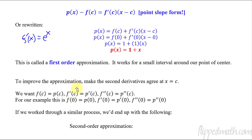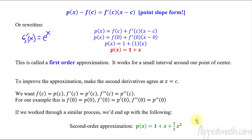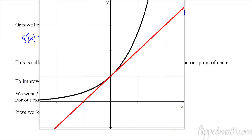So if we want to make it a better approximation, we take the second derivative and make those agree as well. We know the y values must be the same, first derivatives must be the same, second derivatives must be the same — all at x equals c, in this example at c equals 0. Going through the same process, the second-order approximation gives us p of x equals 1 plus x plus one-half x squared. You can see on the graph the green parabola stays a lot closer to the black original exponential function than the red tangent line. Second order is definitely better than first order.